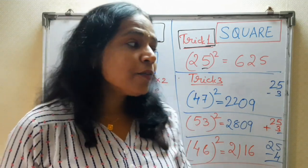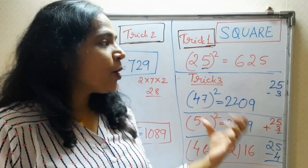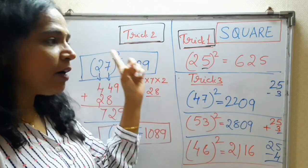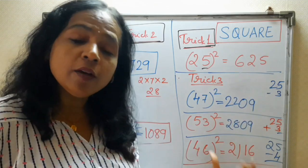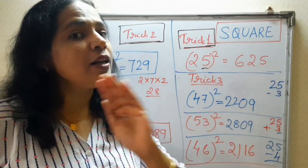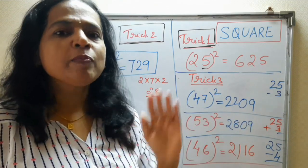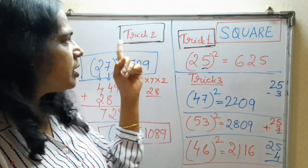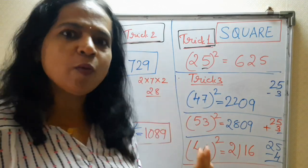So, now you will say, if this trick is there, then what about this trick? Why we are using this? Now, this trick is only for those numbers which are near to 50 numbers. When, and if you are using this trick for these numbers, that will also work.